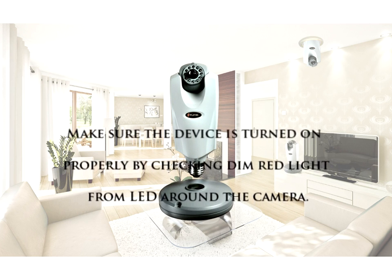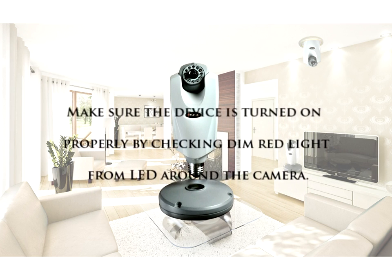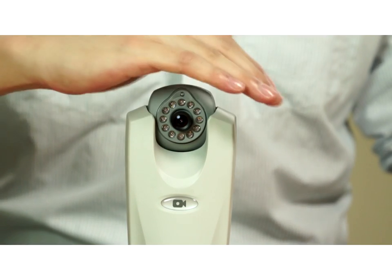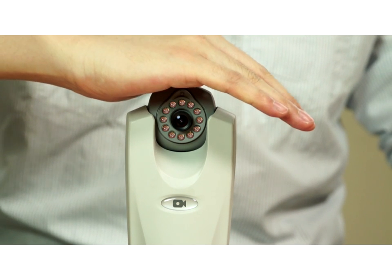Make sure the device is turned on properly by checking dim red light from the LED around the camera. It is easier to use your hand to block light from above when checking.